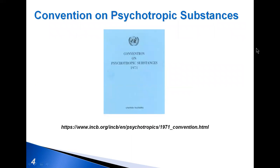The first treaty designed to control psychoactive drugs was the Convention on Psychotropic Substances of the United Nations, which came into force in 1971.